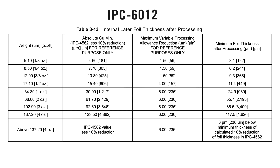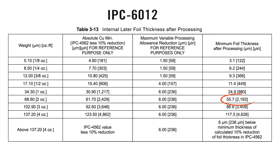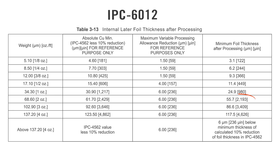Where we see the potential challenges is when we see the thickness for inner layers specified as 35 microns minimum. This means that in order to achieve this 35 microns, or 1.38 mil, as the foil thickness after processing, we would need to start with two ounce, which would provide 55.7 microns, or 2.2 mil.